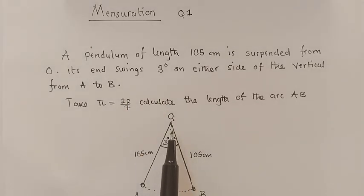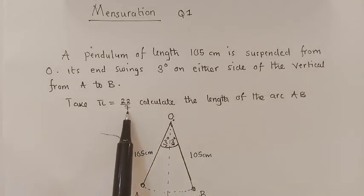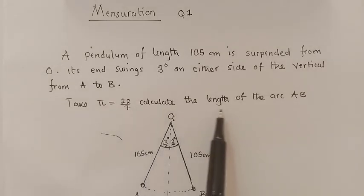on either side of the vertical from A to B. You see this is three degrees and this is three degrees. Take pi as 22 over 7, calculate the length of the arc.